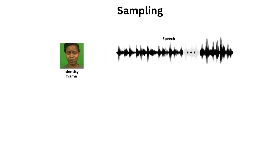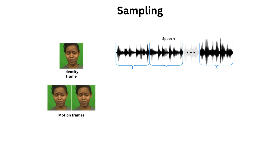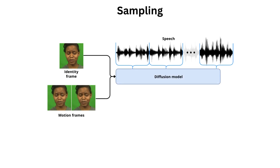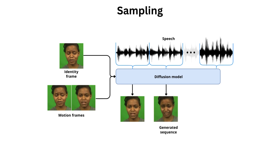To sample a new video, Diffused Heads requires only a single image and audio clip. First, the audio is split into chunks and processed using the audio encoder. Next, the motion frames are initialized with copies of the identity frame. Everything is passed to the diffusion model that generates the first frame. Then, the left-most motion frame is discarded and the newly created one is added. The process is repeated until all of the audio embeddings are used.